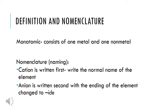The cation is written first, and you just write the normal name of the element. So if it says magnesium, then it's magnesium. If it has a symbol for calcium, then it's calcium. The anion is written second with the ending of the element changed to -ide. So instead of chlorine, it's chloride. Instead of oxygen, it's oxide.